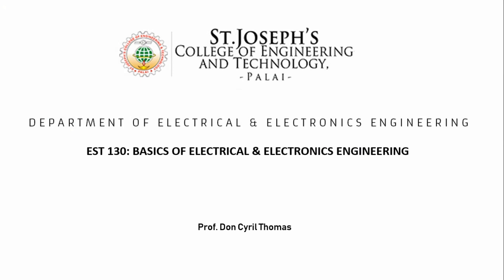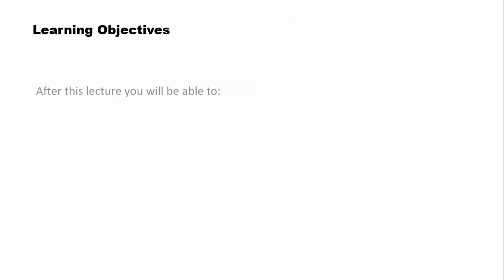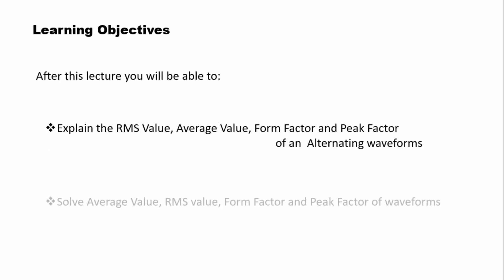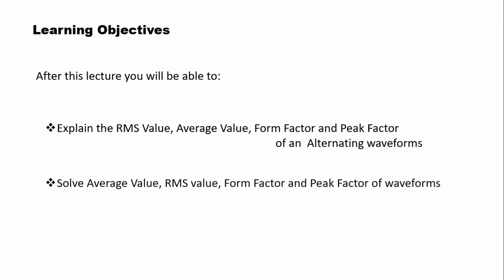Welcome students. Today we are going to discuss the third part of the second module of Basics of Electrical and Electronics Engineering, Lecture 2. The learning objectives are: explain the RMS value, average value, form factor and peak factor of alternating waveforms.